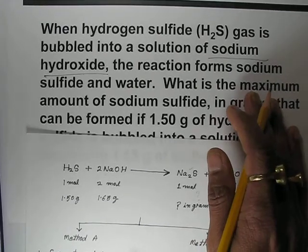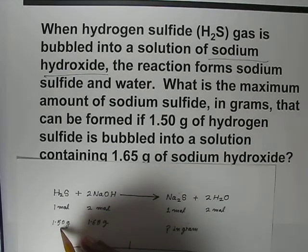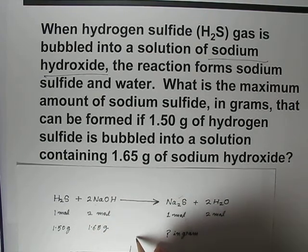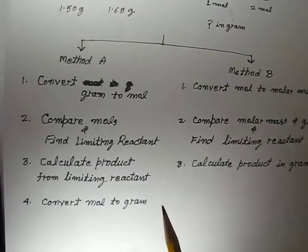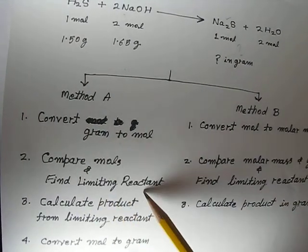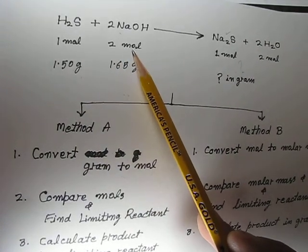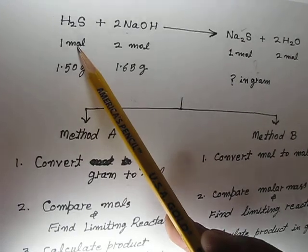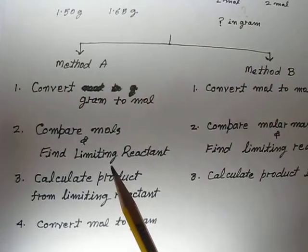They want the theoretical yield in grams that can be formed if 1.5 grams of hydrogen sulfide gas is bubbled into 1.65 grams of sodium hydroxide. This is a very good example of a limiting reactant problem. To solve it, there are two methods: either you can convert every gram quantity into moles and then compare the moles to find out the limiting reactant.